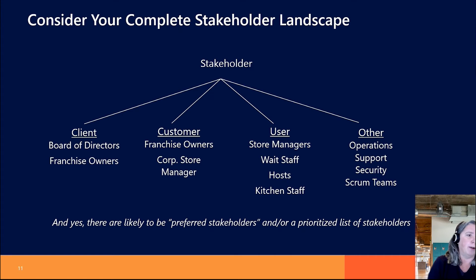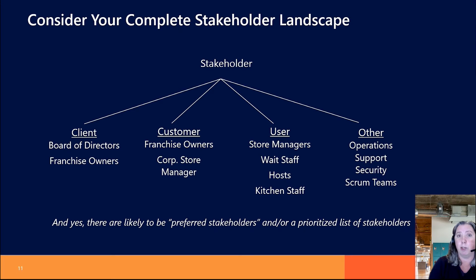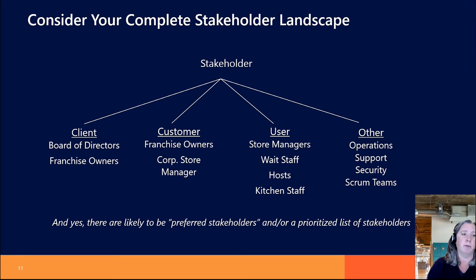Here's another model: clients are the people who provide us with resources — probably money for our project. Customers are people who can accept or reject the work we do — yes, you can release this product, or no, this isn't going in. Users are people who actually use it directly or indirectly. And 'other' includes people inside the organization who have a real stake in what we're trying to do. So let's make sure we understand all of that.